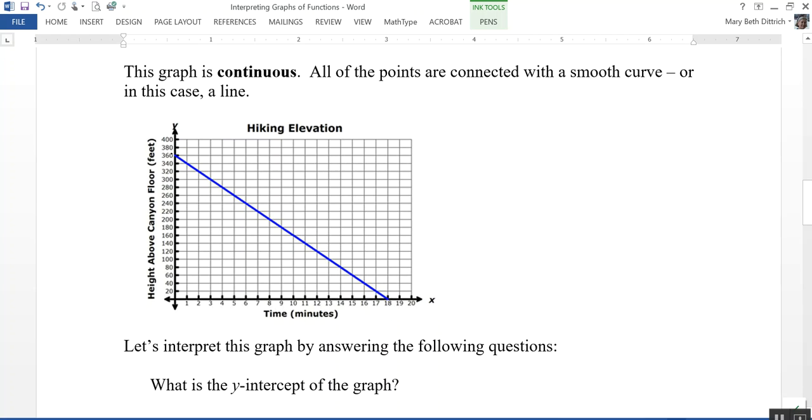So what is the y-intercept of this graph? The y-intercept is going to be this point up here, 360. Now, what does that mean within the context of the graph? Let's take a look at this. So the title on this graph is Hiking Elevation. My x-axis is time in minutes. My y-axis is height above the canyon floor in feet. And I notice that it's kind of generally going downhill. So what does this mean? This means the person is hiking. They start above the canyon floor, so they're starting on a ridge, and the height they're starting at is 360 feet above the bottom of the canyon. And as time goes on, as time passes, they're descending down into the canyon.